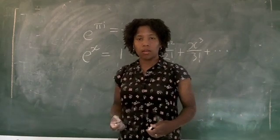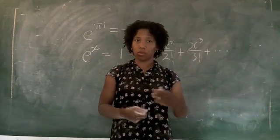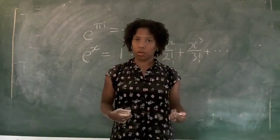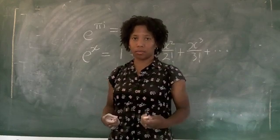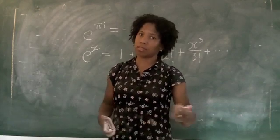And from there, through a short step through the unit circle, we'll show that e to the pi i is equal to negative 1. Let's get started.